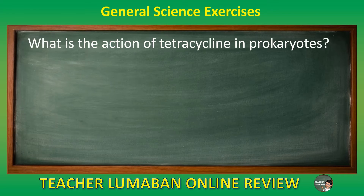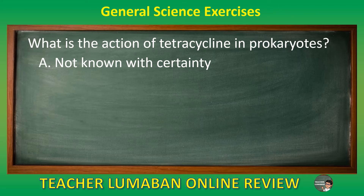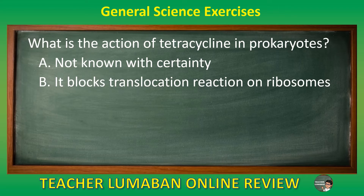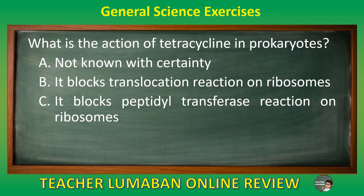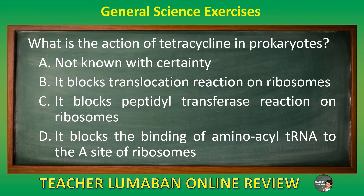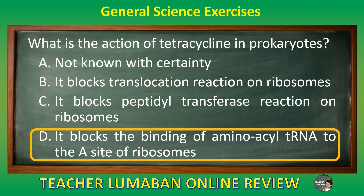What is the action of tetracycline in prokaryotes? Letter A not known with certainty. Letter B it blocks translocation reaction on ribosomes. Letter C it blocks peptidyl transferase reaction on ribosomes. Letter D it blocks the binding of aminoacyl tRNA to the A site of ribosomes. The correct answer is letter D: it blocks the binding of aminoacyl tRNA to the A site of ribosomes.